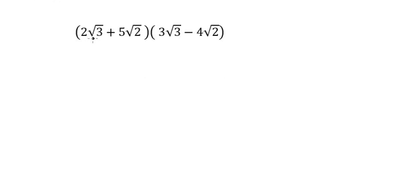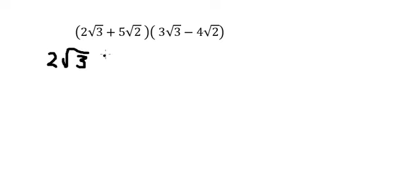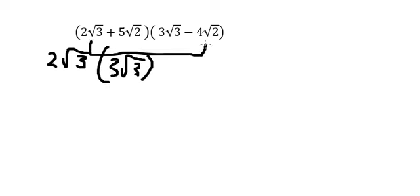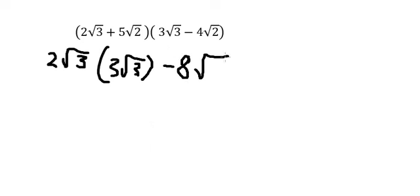So we have number 2 with the square root of number 3, multiplied by this one. Positive with negative gives us negative. 2 with 4 gives us 8. Number 3 multiplied by number 2 gives us number 6.